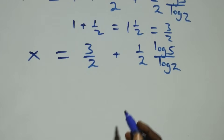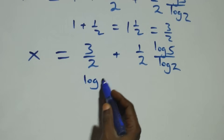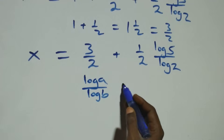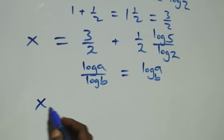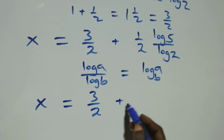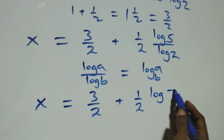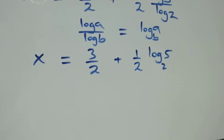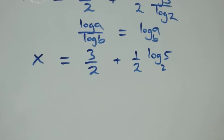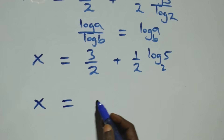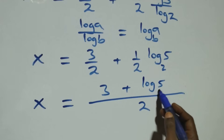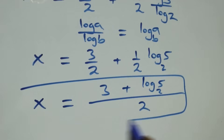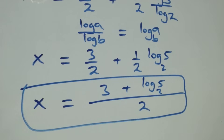Applying the change of base formula — log a over log b equals log base b of a — log 5 over log 2 becomes log base 2 of 5. Bringing this together as one fraction, x equals (3 plus log base 2 of 5) all over 2.